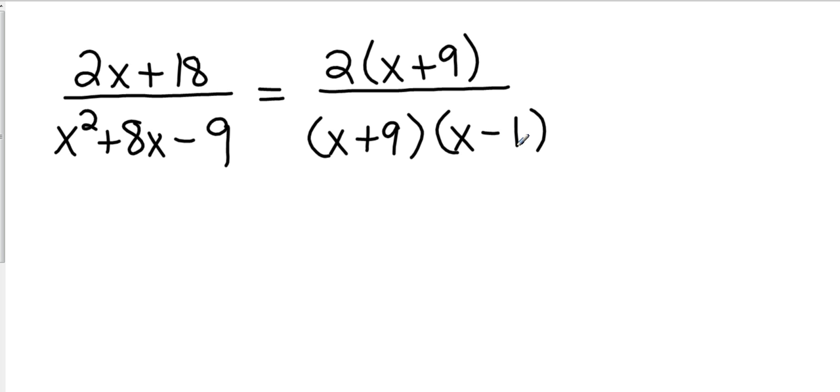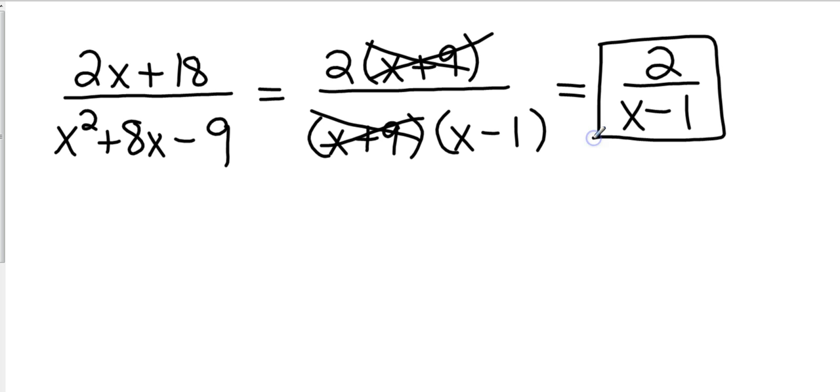So anytime we have something on top of a fraction and bottom of a fraction that is the same, we can cancel it. And so our final answer is 2 over x minus 1. So factor everything that you can, and then solve.